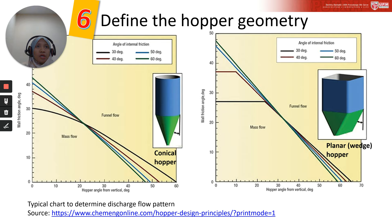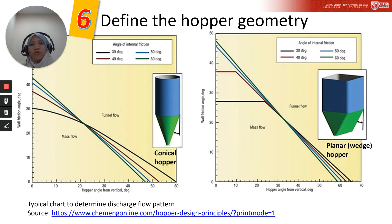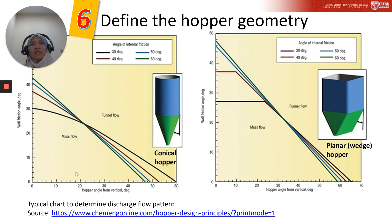Here we consider two common flow patterns that are preferable in industry: either mass flow pattern or funnel flow pattern. The difference between mass flow and funnel flow has been described in the previous lecture, which you can refer to from the previous video.